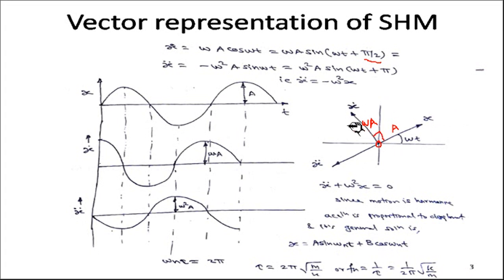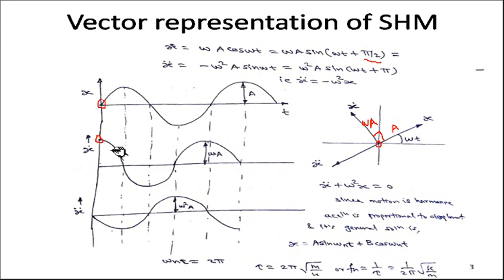Displacement, velocity, and acceleration have specific phase differences between them. At t = 0, displacement is zero, velocity is maximum (cosine curve), and acceleration is −ω²A sin(ωt) — an inverted sine curve, shifted by 180 degrees. So displacement is a sine curve, velocity is a cosine curve, and acceleration is an inverted sine curve.